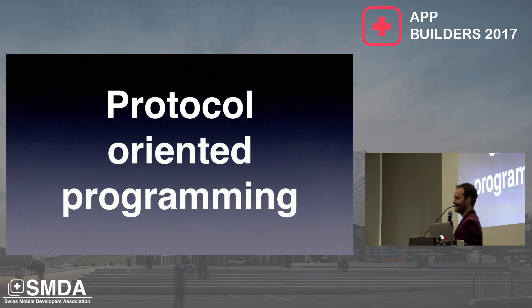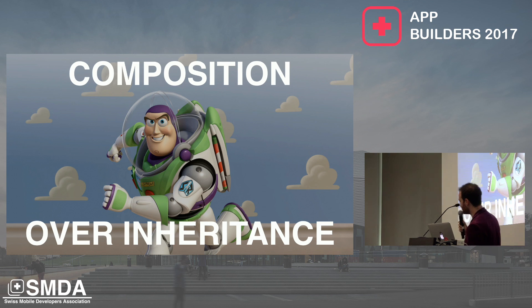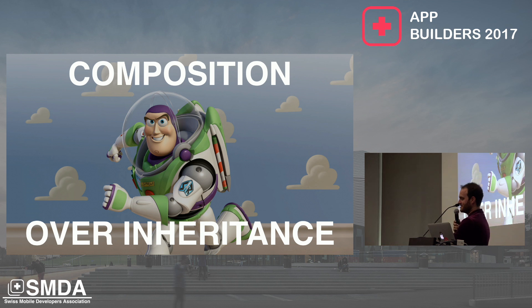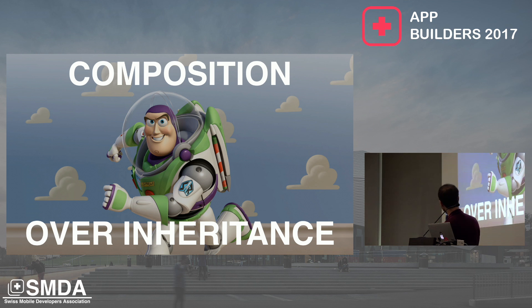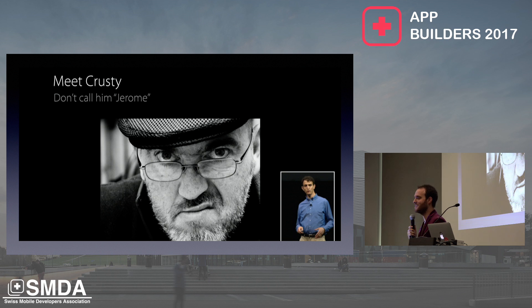The first thing I want to talk about is protocol-oriented programming. In the last year I attended and spoke at about 10 conferences around Europe, and pretty much everyone had a talk that mentioned this in some way. The big buzzword is composition over inheritance. As someone who grew up playing with Legos, that's a really nice idea — the idea that your objects can just be like blocks put together. It was introduced in a WWDC talk where we met Krusty in 2015, and Apple really sold it as a silver bullet, as something that would change the way you write Swift code forever.